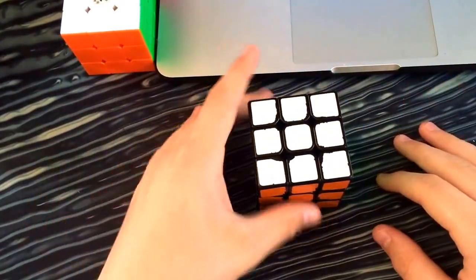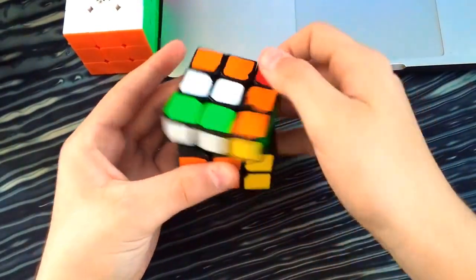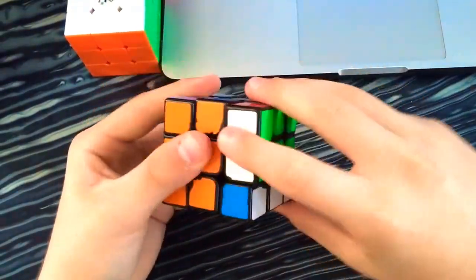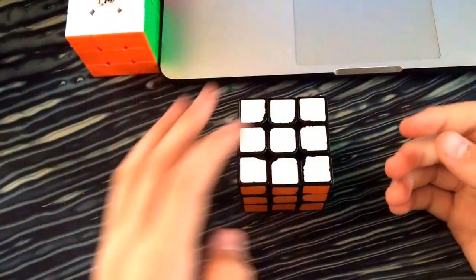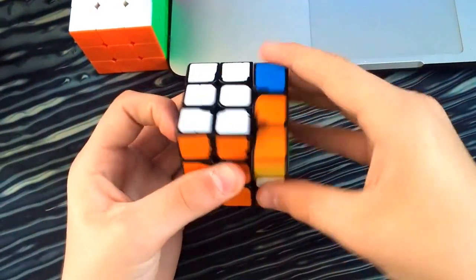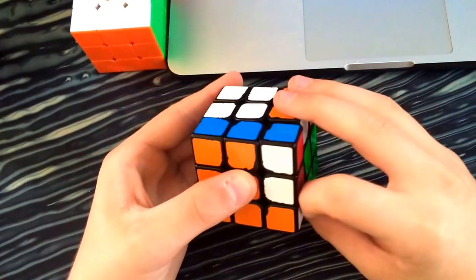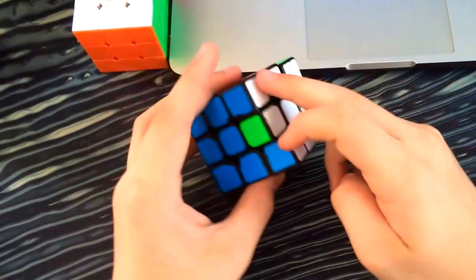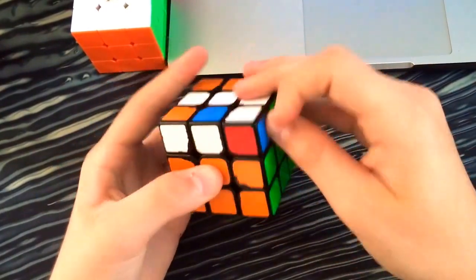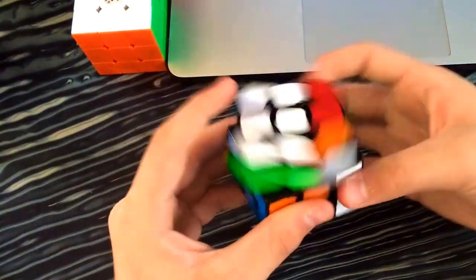And last but not least, the Y perm. I like this alg. So if you're having trouble learning the Y perm, by the way. Break the T perm up into two parts. So you have the sexy move sledgehammer. And then you have the second part of it. Which does the T perm. And if you reverse these two parts. You will get the Y perm. But that ended up in the J perm.